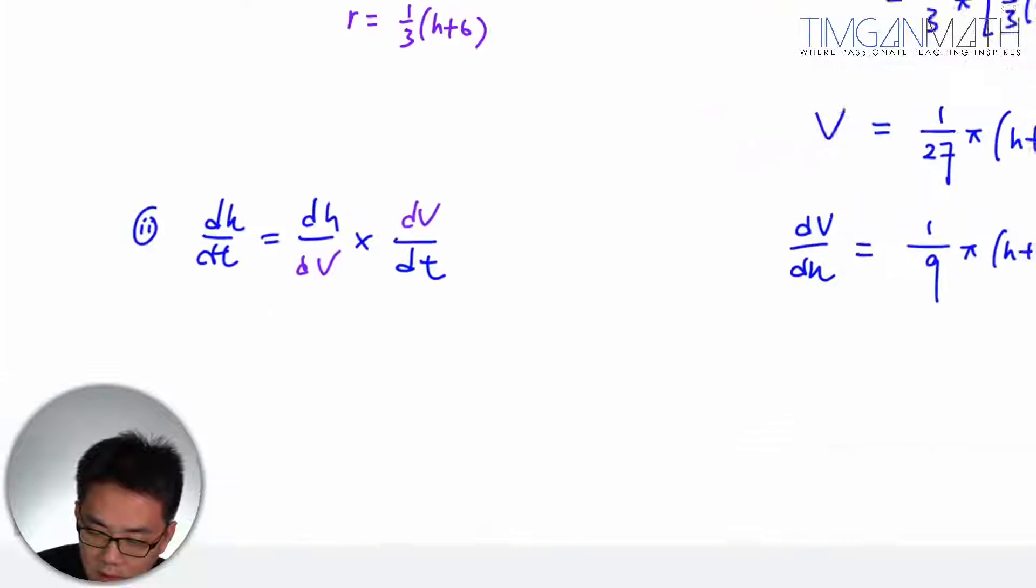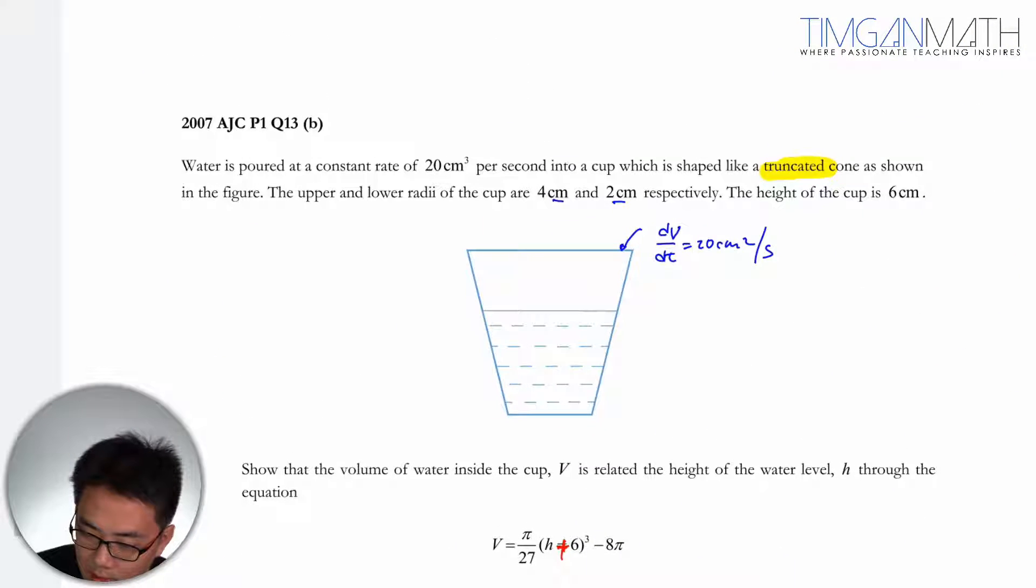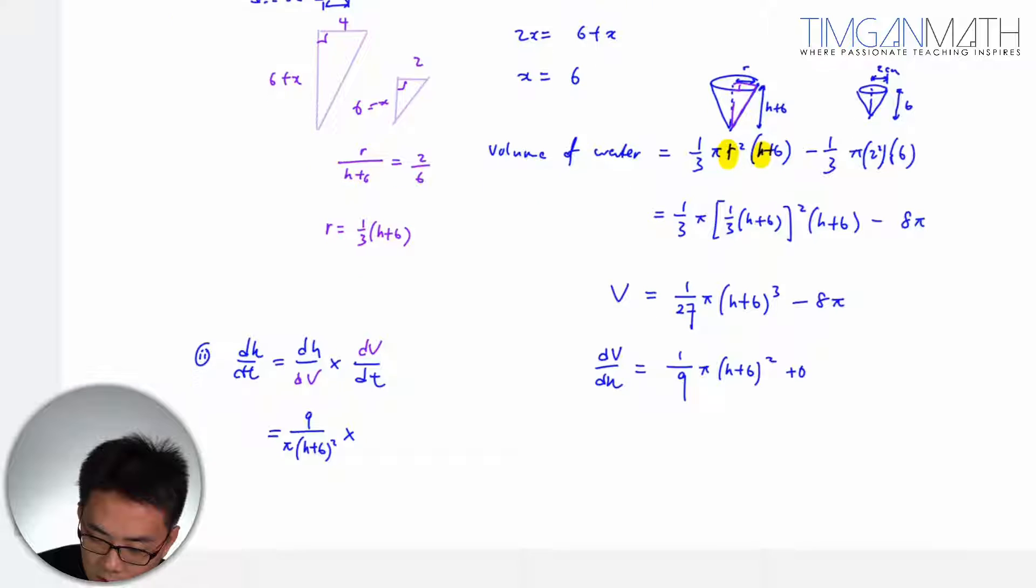And dh/dV would then be 9 over π(h+6)². dV/dt is 20.